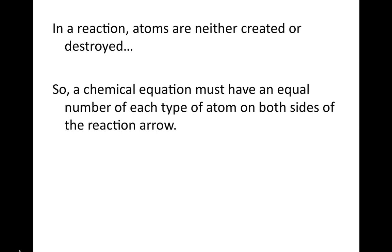In a chemical reaction, atoms are neither created nor destroyed, so this means that a chemical equation must have an equal number of each type of atom on both sides of the reaction arrow.